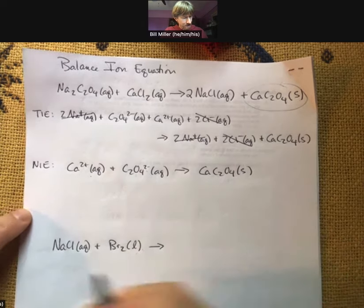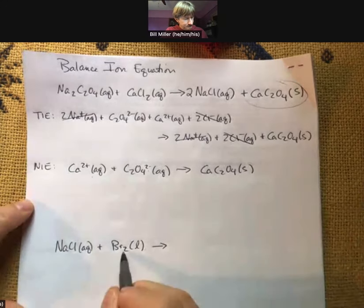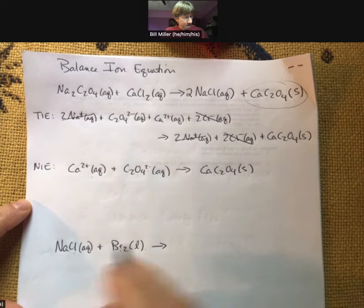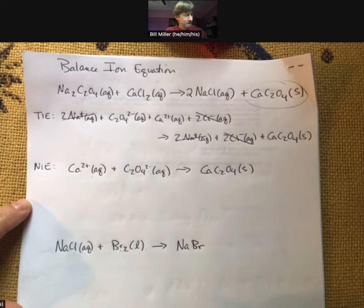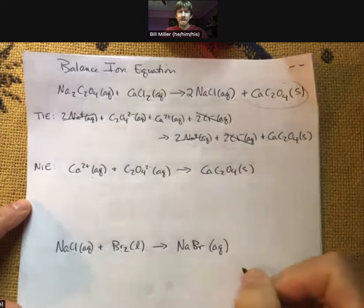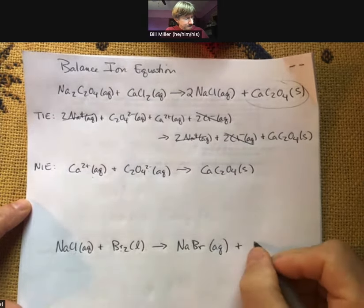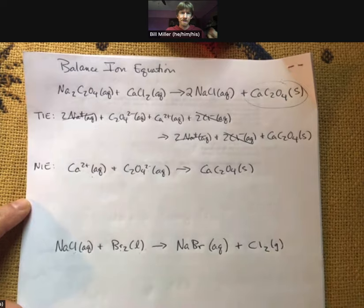I should write my products. This is single replacement. For single replacement, we can see that we have a non-metal here and a non-metal here. That means they're going to replace each other. My product is going to be NaBr, just NaBr, because sodium is plus one and bromide is minus one. All sodium species are soluble, which means this is aqueous. My chlorine is going to be kicked out. Chlorine is a diatomic. We also know it is one of our gases, and so it is just there.